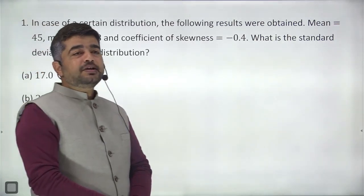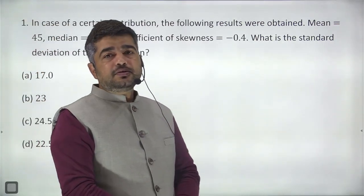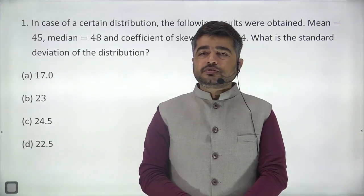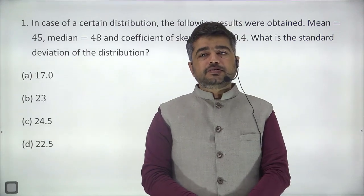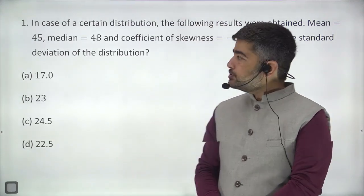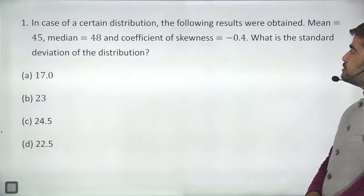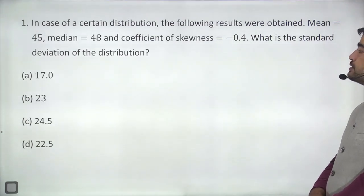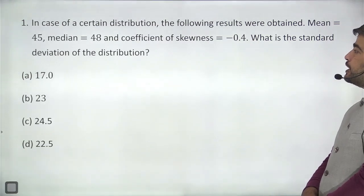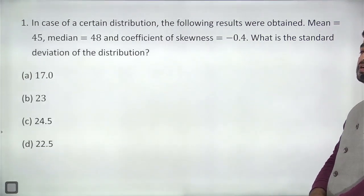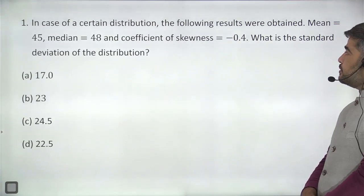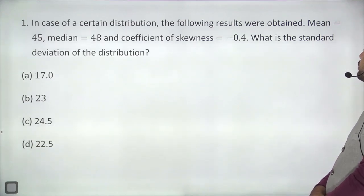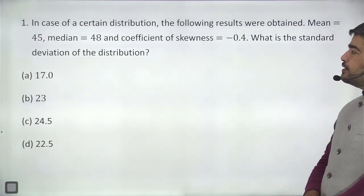Hello students, welcome to Azutep. This is your Statistics Session Number 2 for MCQs. We will discuss 10 MCQs here. Most important MCQs: in case of a certain distribution, the following results were obtained — mean is equal to 45, median is equal to 48, and coefficient of skewness is equal to minus 0.4. What is the standard deviation of the distribution?